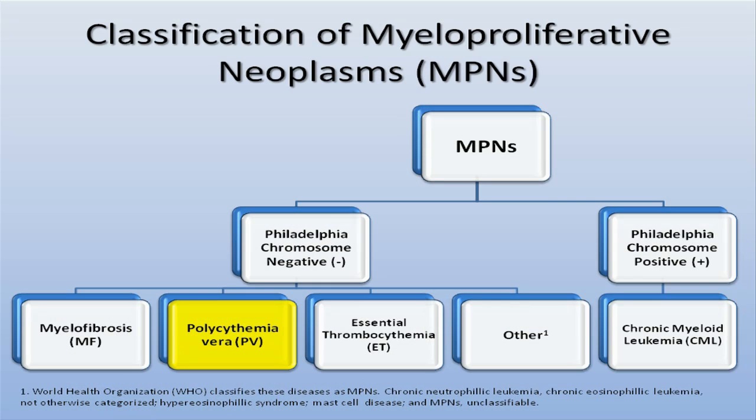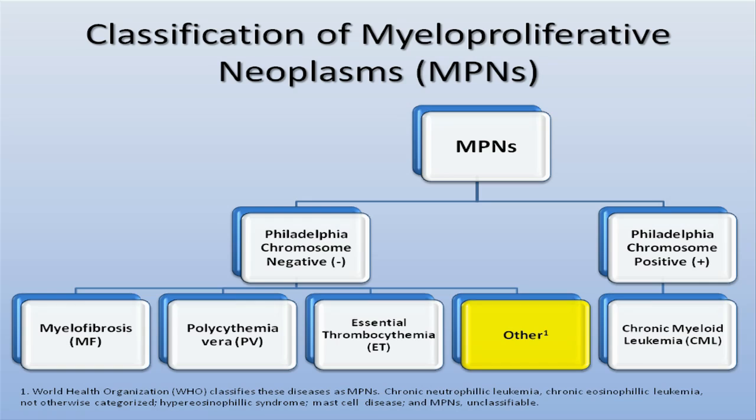The original four classical myeloproliferative neoplasms were polycythemia rubrovera, essential thrombocytemia, and idiopathic myelofibrosis, together with chronic myeloid leukemia. Chronic myeloid leukemia, since the discovery of the Philadelphia chromosome, is typically thought of as something separate from the other MPNs at present.